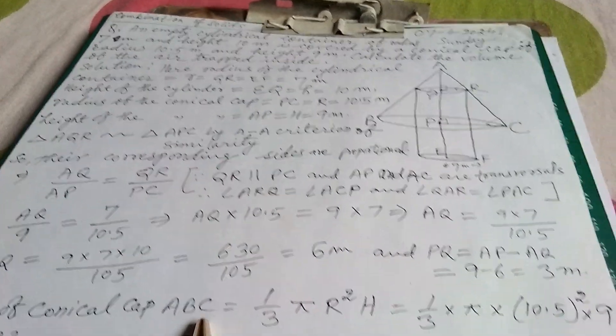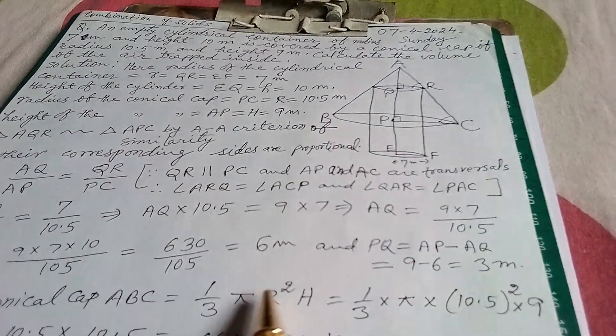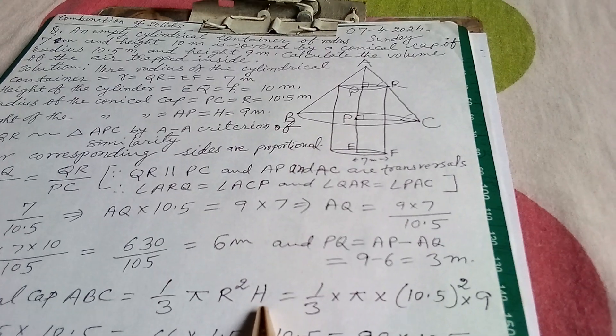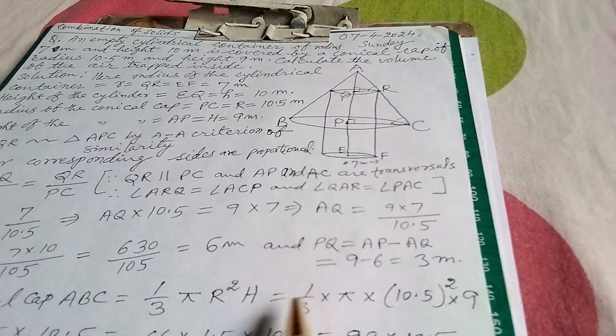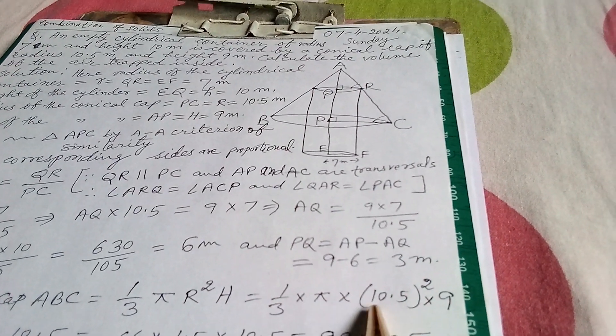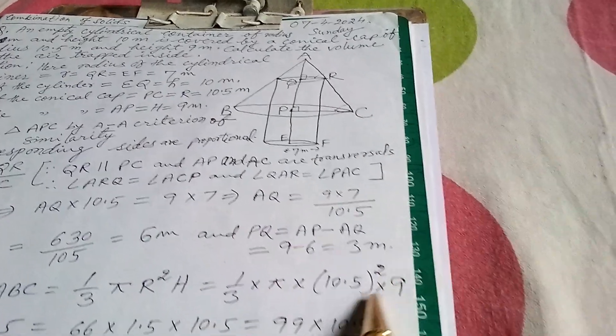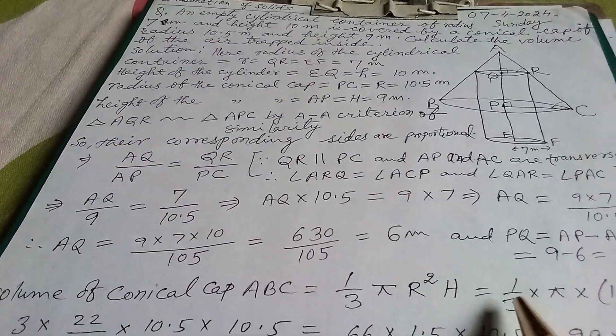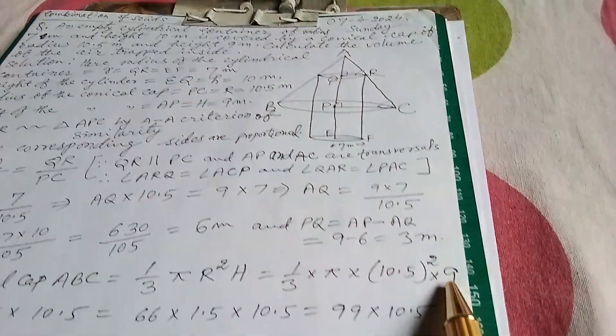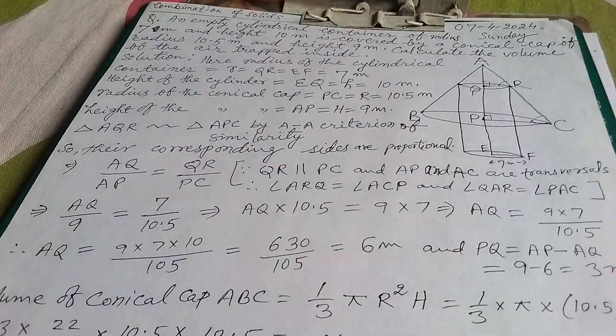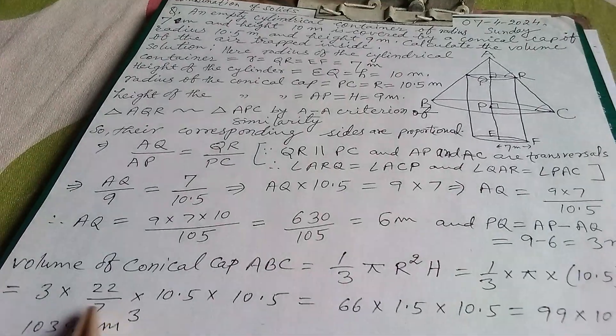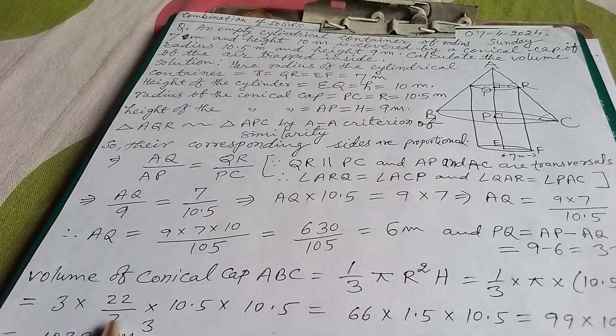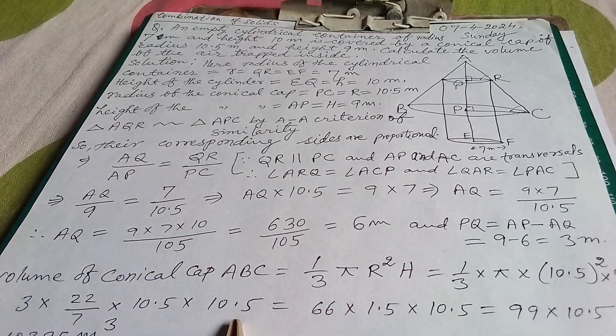Now volume of conical cap ABC equals 1/3 π R² H. This is capital H and this is capital R. So 1/3 times π times 10.5 squared times 9. Now 3 and 9 being cancelled, so here 3 is left. And π is 22/7, so 3 times 22/7 times 10.5 times 10.5.